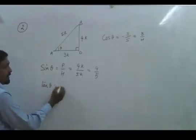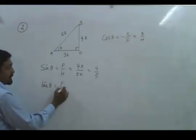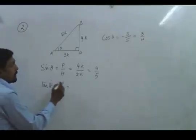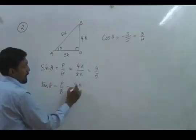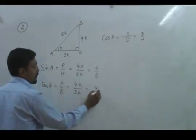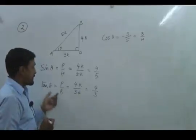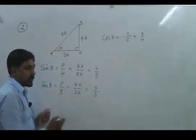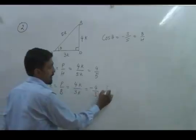Now similarly, if we are asking tan theta, so tan theta is perpendicular upon base. Your perpendicular is 4k, base is 3k, so result is 4 by 3. But again, since theta lies in second quadrant, we put negative sign.